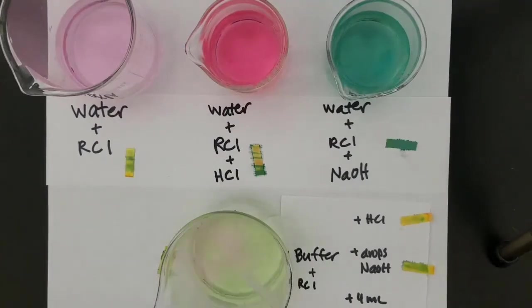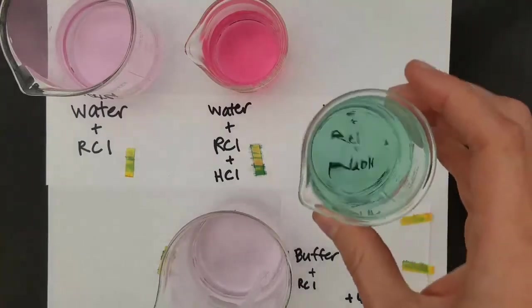We're sitting here with our buffer, and we're going to start adding just whole squirts of acid. So it was basic, but by adding acid, we can neutralize that base, and we can get back to a relatively acidic pH, actually, kind of like the color of that water there.